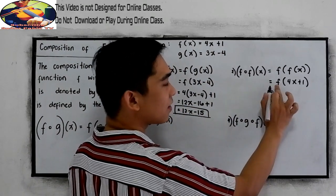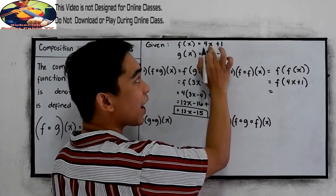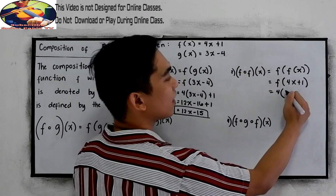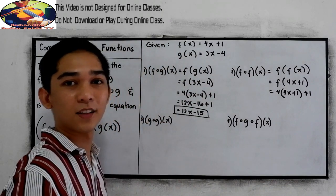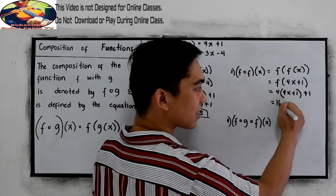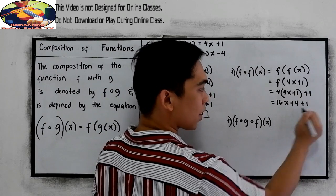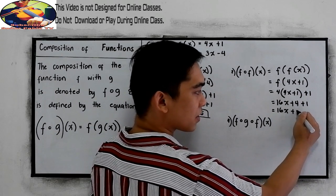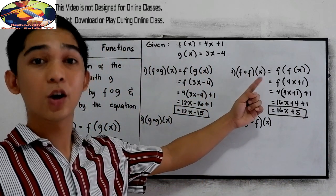We are still working with f, so our f is 4x plus 1. Change x to 4x plus 1, so we have 4 times (4x plus 1). Distributing: 4 times 4x is 16x, 4 times 1 is positive 4, then copy plus 1. Combine like terms: 16x, and 4 plus 1 is positive 5. So the value of f composed of f of x is 16x plus 5.